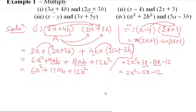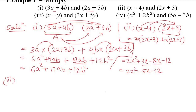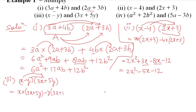For the third part: multiply (x - y)(3x + 5y). We distribute: x multiplied by (3x + 5y) and -y multiplied by (3x + 5y). This gives x × 3x = 3x², x × 5y = 5xy, -y × 3x = -3xy, and -y × 5y = -5y².